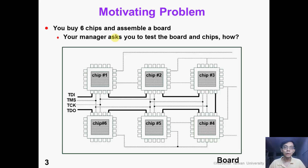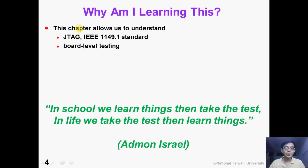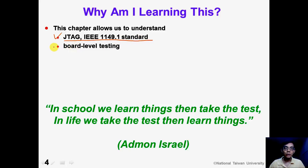Here is a motivating problem. Suppose you buy six chips and assemble a board. Your manager asks you to test the board and the chips. Since the board is already assembled, you cannot disassemble the chips. So how can we do it? In this chapter, we will learn the concept of JTAG, which is also known as IEEE 1149.1 standard. We will also understand the concept of board-level testing.